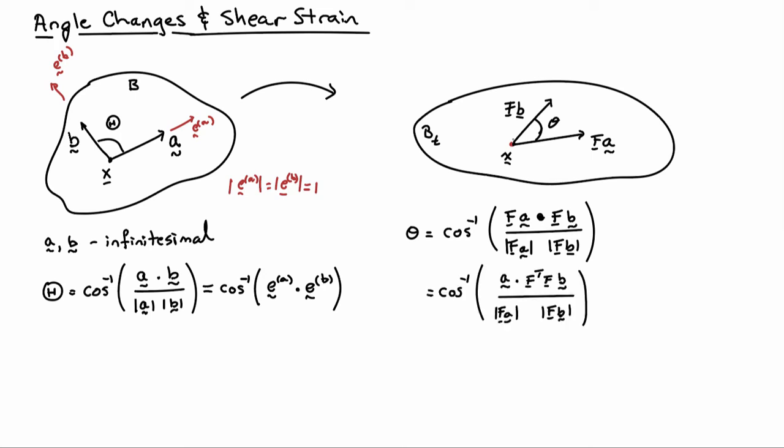I can play the usual game. I'm going to move the F to the other side of the dot product, so it's going to become an F transpose. I have A dotted with F transpose F B, again, divided by the norms.